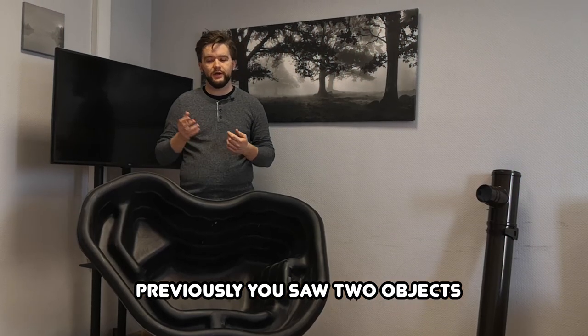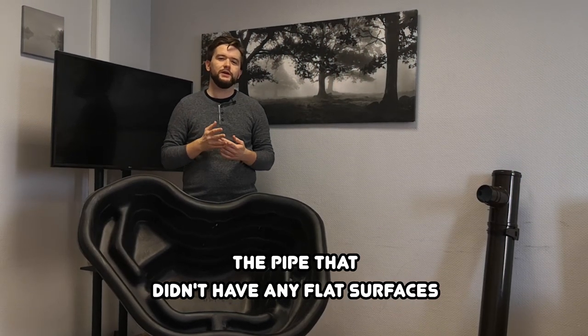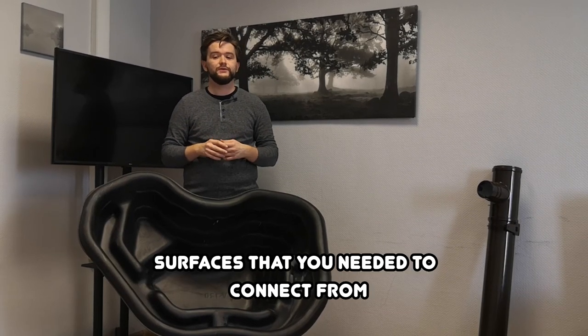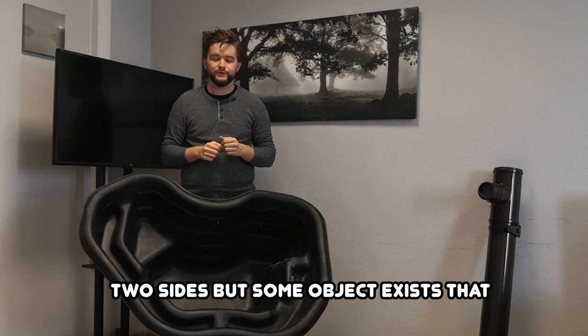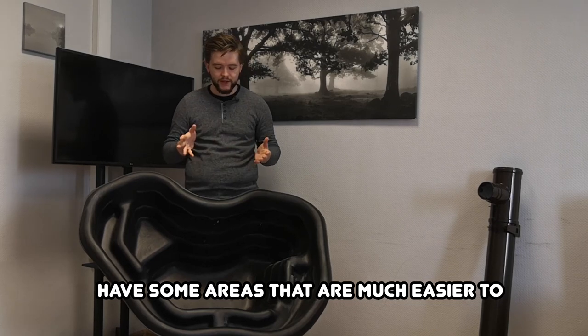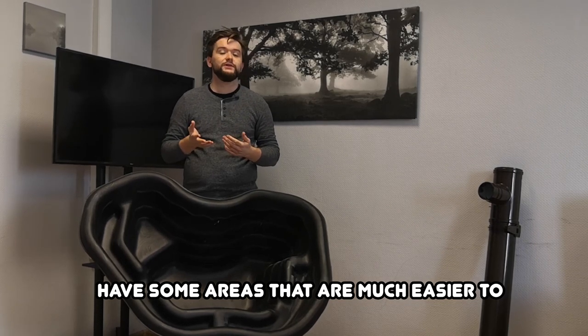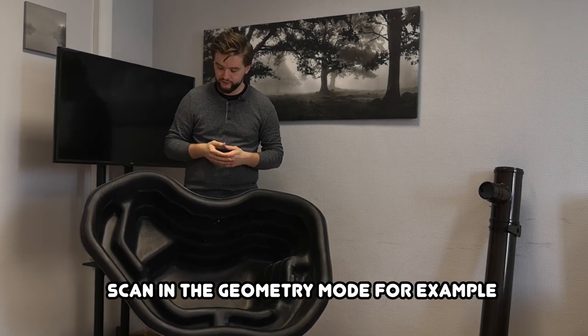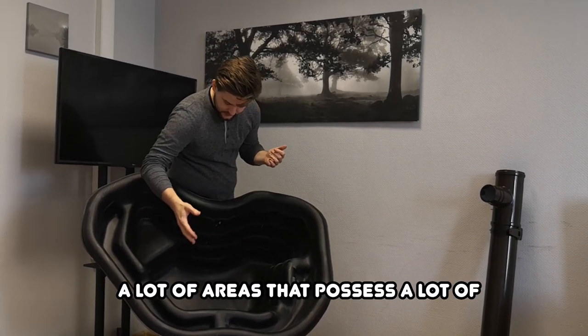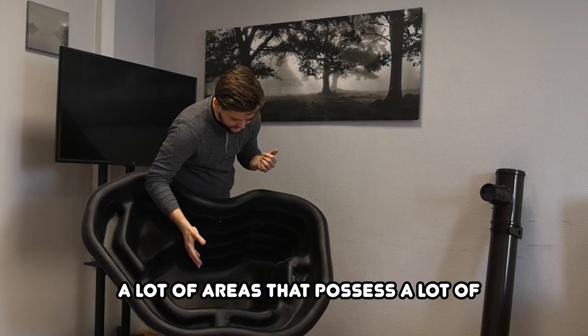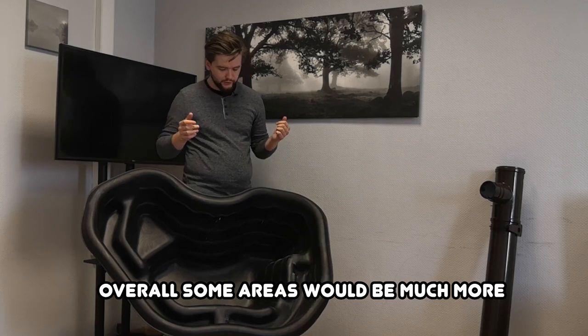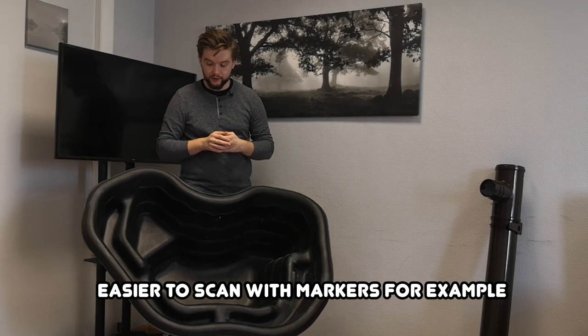Previously, you saw two objects: the pipe that didn't have any flat surfaces and the door that had a lot of flat surfaces that you needed to connect from two sides. But some objects exist that have some areas that are much easier to scan in the geometry mode. For example, that bath. And as you can see, there's a lot of areas that possess a lot of distinct geometry, like these walls. But overall, some areas would be much easier to scan with markers.